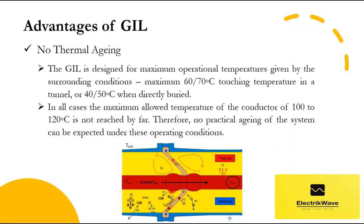GIL has no thermal aging. The GIL is designed for maximum operational temperatures given by the surrounding conditions — maximum 60 or 70 degrees Celsius touching temperature in a tunnel, or 40 or 50 degrees Celsius when directly buried. The different temperature values depend on individual countries and their applied standards and regulations. In all cases the maximum allowed temperature of the conductor — 100 to 120 degrees Celsius — is not reached by far. Therefore, no practical aging of the system can be expected under these operating conditions.